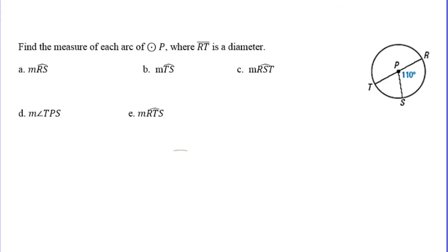So moving on, I have a little example where we actually use this information. It says find the measure of each arc of circle P. That's telling us that P is the center of the circle, where RT is a diameter. Here we're given that arc RS is 110 degrees. What's the measure of arc RS? That would be 110 because there's my central angle, so therefore the arc has to be 110 as well.